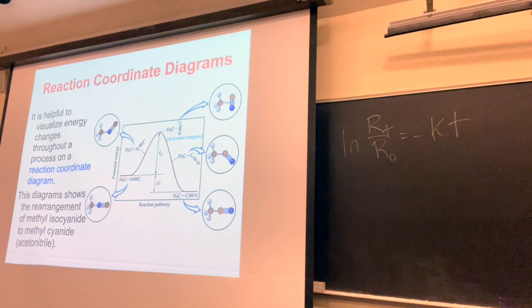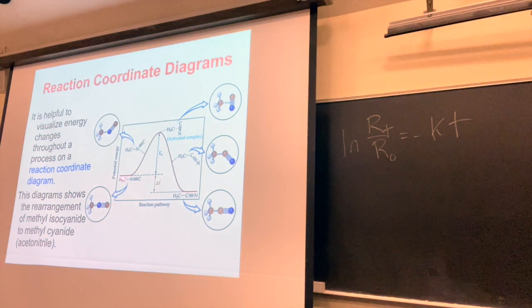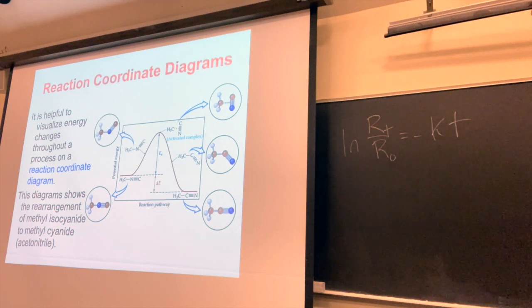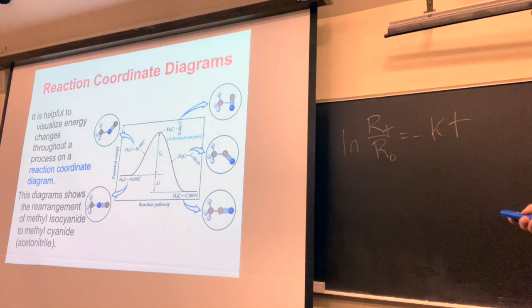This is called a reaction coordinate diagram. You have a start on the left, a stop on the right, and along the way there's usually a hump. That hump is really, really important. Over here on the left we have methyl isocyanide, where the CH₃ group is connected to the nitrogen — not normally the way these chemicals come together.